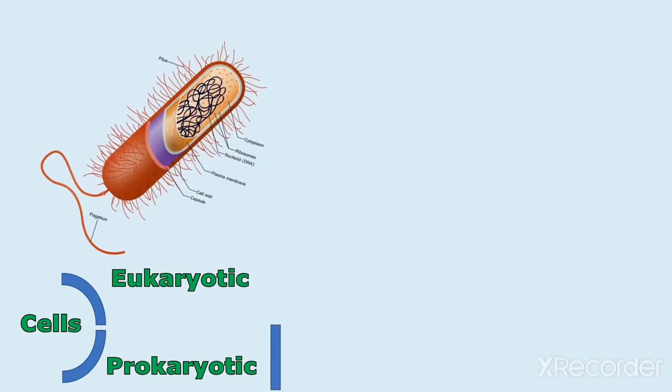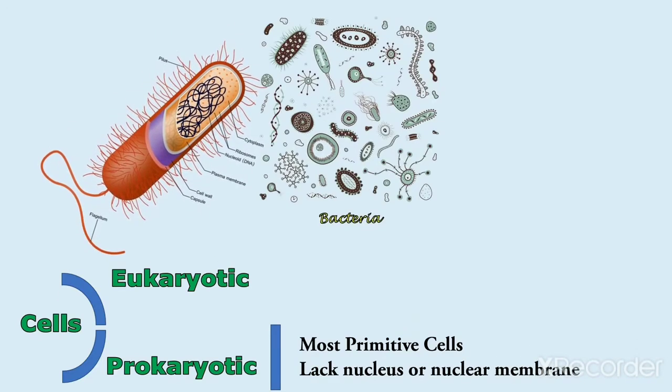Types of cells. Cells are of two types: prokaryotic cells and eukaryotic cells. Prokaryotic cells are the most primitive cells. They lack true nucleus and nuclear membrane. Examples: bacteria, blue-green algae.